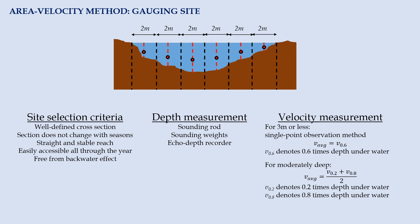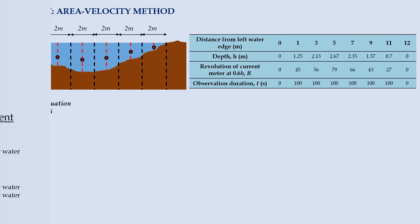Once we have the average velocity data for each subsection, we can proceed with the calculation of stream flow using area-velocity method. Let's try this in an example.